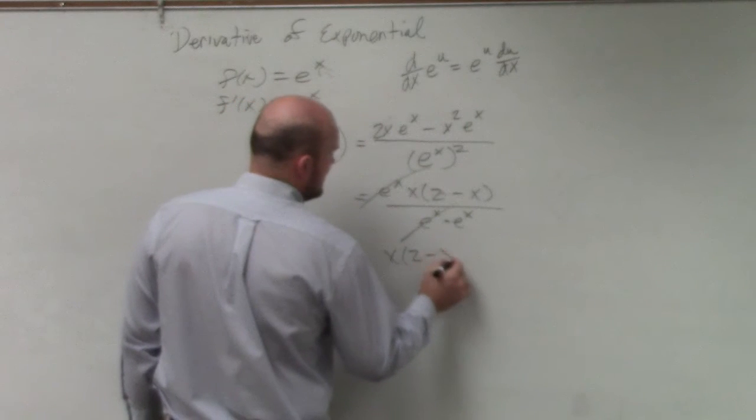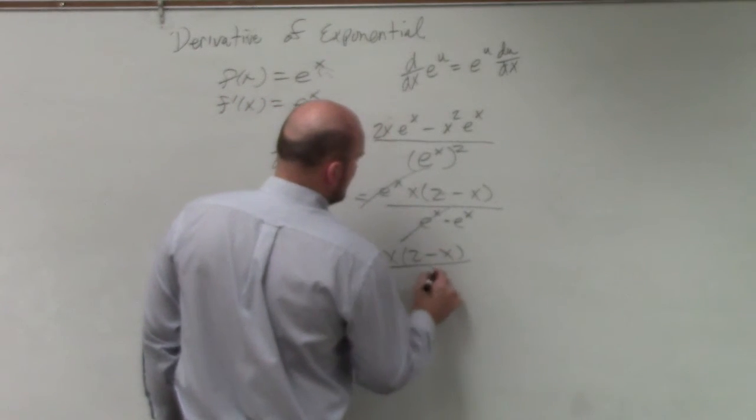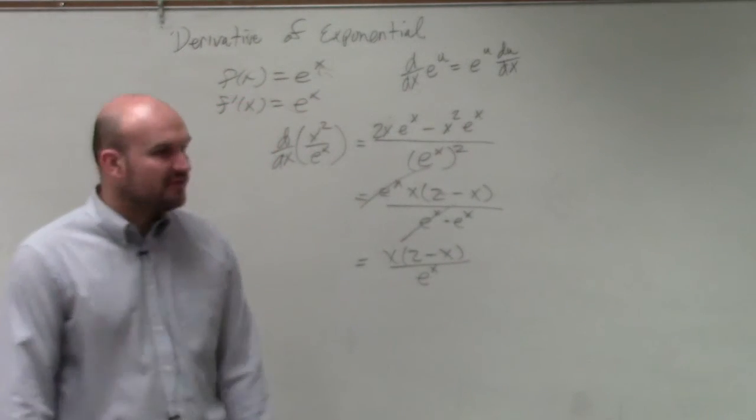what you see is those two e to the x's can divide out as you're simplifying this. So you're left with x times 2 minus x over e to the x. Would be a simplified version of that.